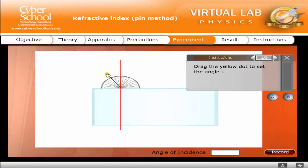Drag the yellow dot to set the angle I. Click Record. This generates points A and B.